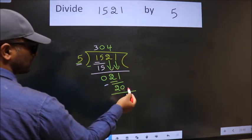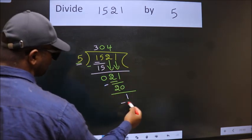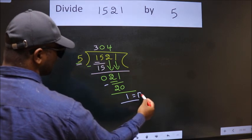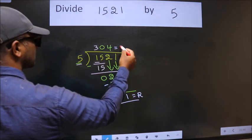No more numbers to bring down. So we stop here. This is our remainder and this is our quotient.